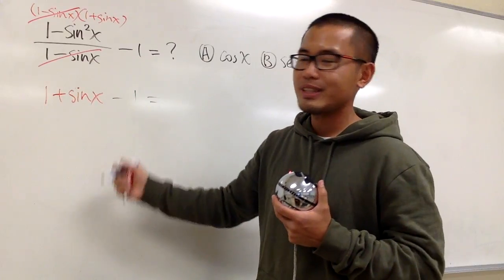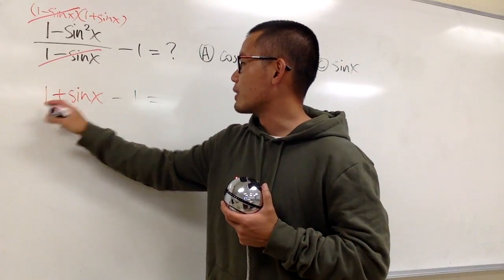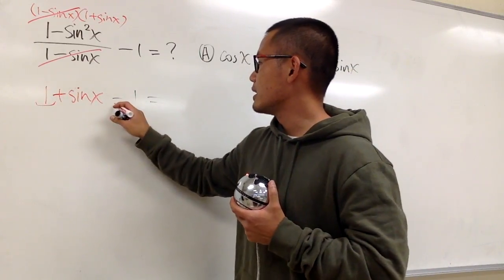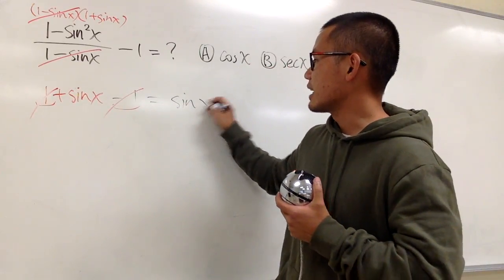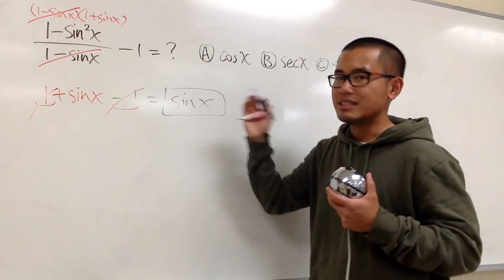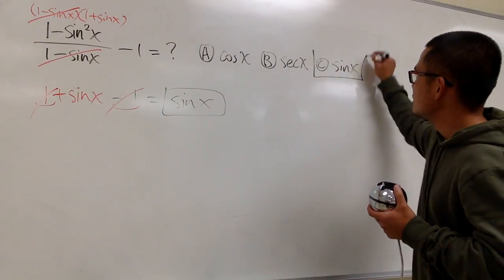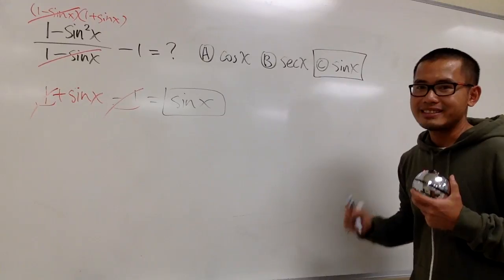What's this? Well, this and that will cancel, right? The 1 and then the minus 1, they pretty much just cancel each other out, so we just end up with sine x. That's all. And this is the simplest that you can get, of course. And it's choice C, just like this.